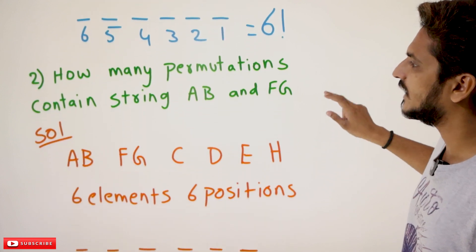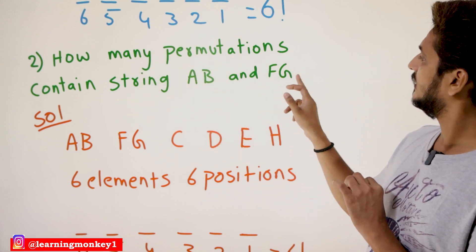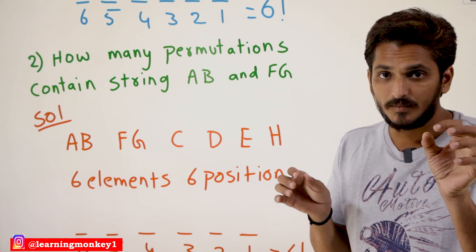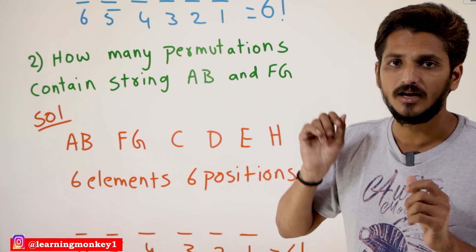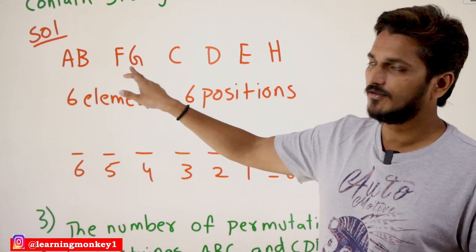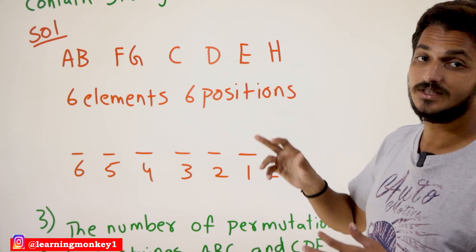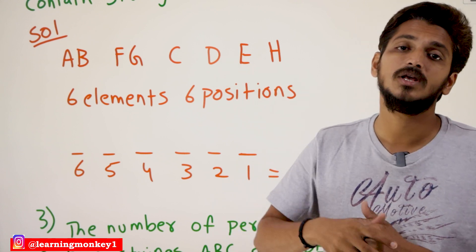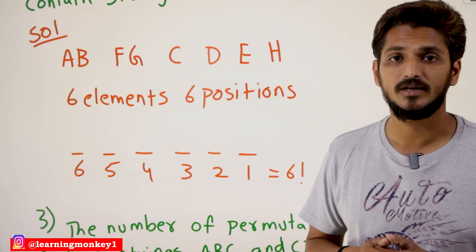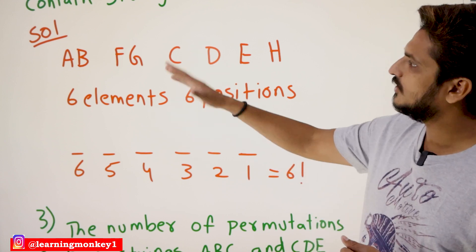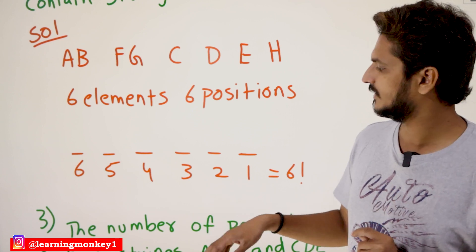Now consider the second example. The same alphabets A, B, C, D, E, F, G, H are provided. How many permutations contain the string A, B and F, G? A, B should be combined as a single element and F, G as another element. The remaining elements are C, D, E. So total elements are: A,B combined, C, D, E, F,G combined — that is 6 elements. These 6 elements can be arranged in 6 factorial ways in 6 positions. Whatever way you arrange, A, B will be there and F, G will be there since we are considering them as single elements. So 6 factorial ways.